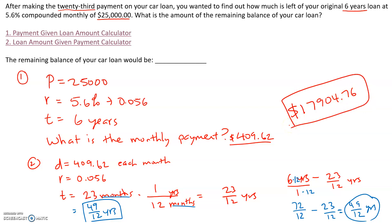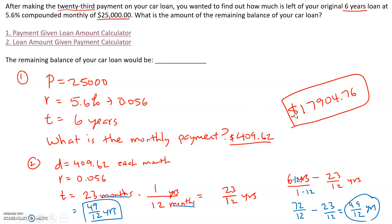So once again, when you do this problem, split it into two parts. In part one, use the first calculator to find the monthly payment. In part two, take that monthly payment and the interest rate, and for time always put the remaining time — how many years you still have to make payments for, since time must always be in years. Put that into the second calculator and you will get your loan amount, which is the unpaid balance.